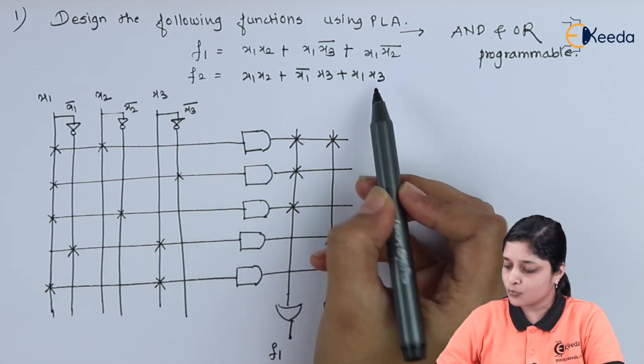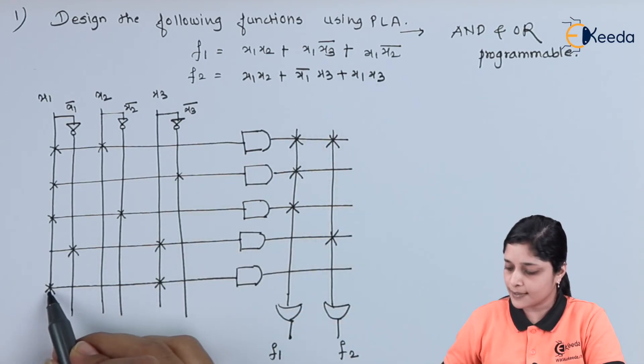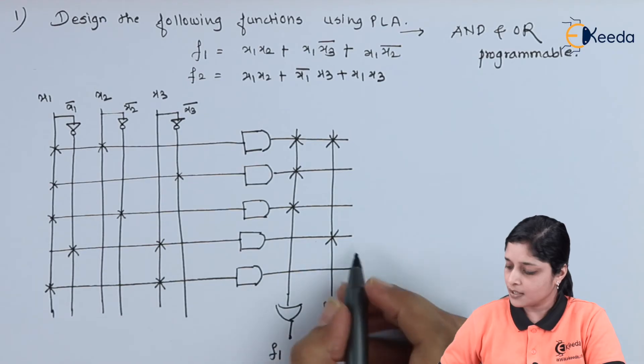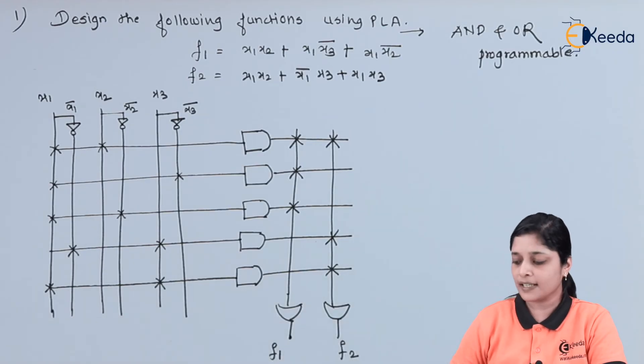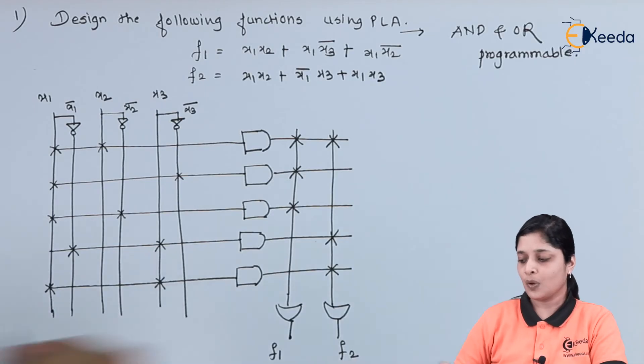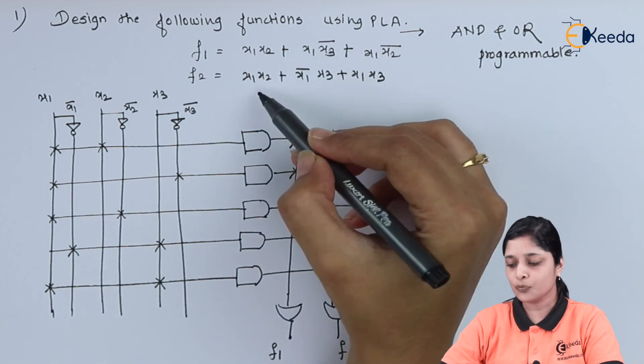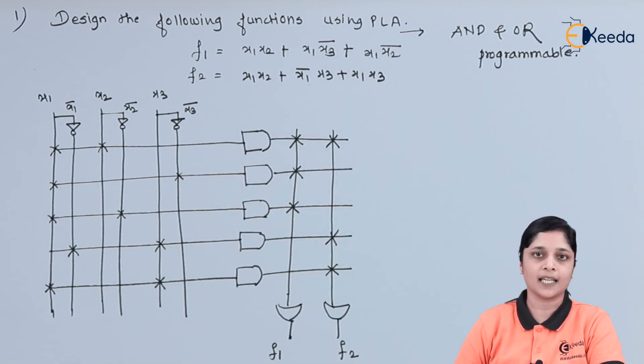After that x1 and x3, so x1 and x3 this gives you the final AND term. In this way you have to make a programmable AND-OR structure for implementing the two functions of PLA, that is Programmable Logic Array.